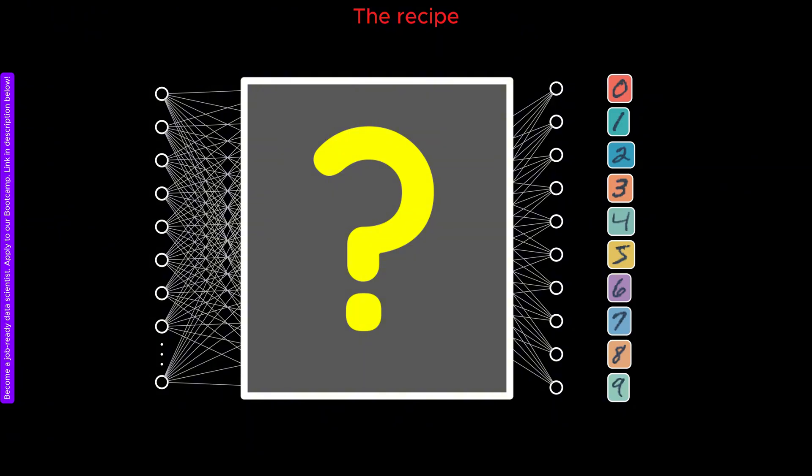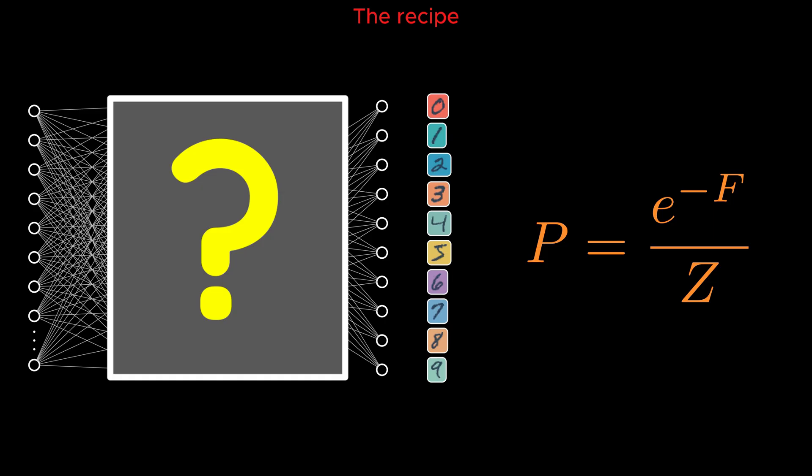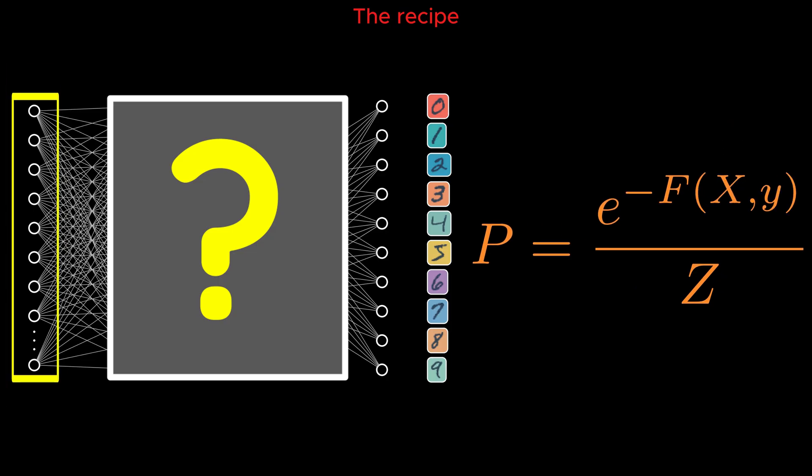That means we deliberately pretend that we do not know how many hidden layers or hidden neurons the model has. We assume that the probability of the AI model under study is given by the following equation. Since we are taking a top-down approach, we assume that the free energy F is only a function of the input layer, which consists of the pixels of the images, and the output layer, which consists of 10 neurons corresponding to the 10-digit classes.